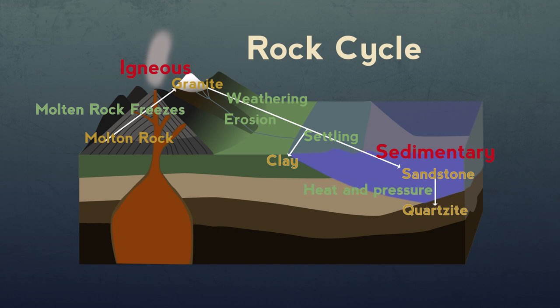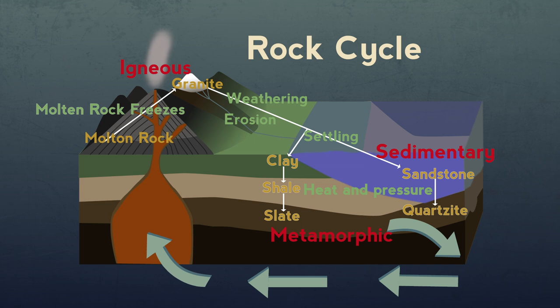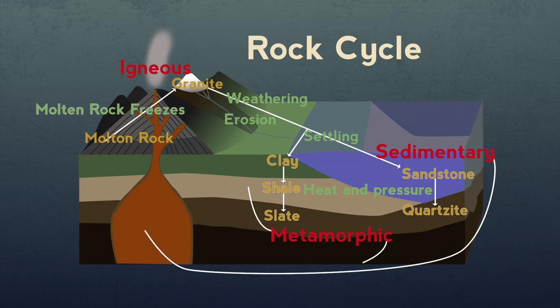These can get heated and compressed to form metamorphic rocks like shale and slate. The movement of the earth's tectonic plates carries rocks into the mantle where they melt to start the cycle all over again.